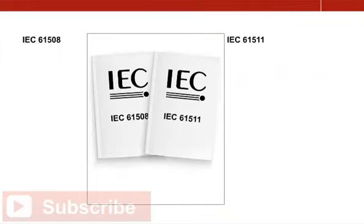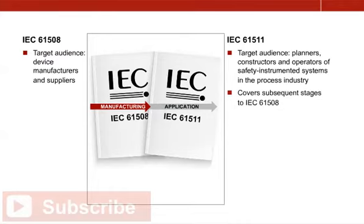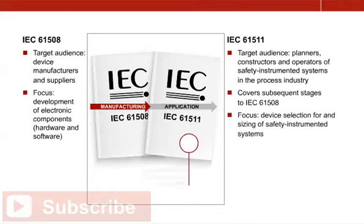The essential international standards dealing with functional safety in the process industry are IEC 61508 and 61511. While IEC 61508 is directed at manufacturers and suppliers of equipment, IEC 61511 is directed at users such as planners, constructors and operators of safety instrumented systems. As a result, both standards cover successive stages in the overall process. IEC 61511, which is the decisive standard for device selection and sizing, makes frequent references to the standard for developing electronic components, that is IEC 61508.